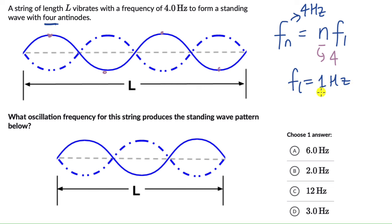And if we know the fundamental frequency, we can then figure out what oscillation frequency for this string will produce the following pattern. So again, Fn equals n F1. F1 is just 1 Hz, and which one is this harmonic?